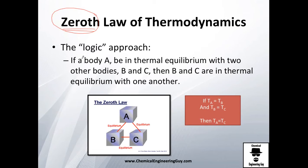They tell you if a body A, which is here, is in thermal equilibrium with two bodies which is B and C—so there is thermal equilibrium, which means they are not exchanging heat between them—then you can say that B and C are in thermal equilibrium with each other.